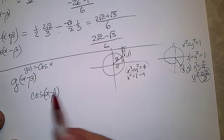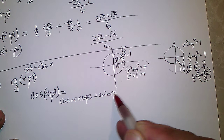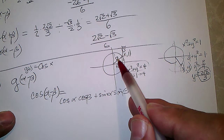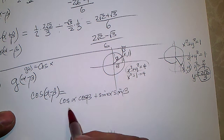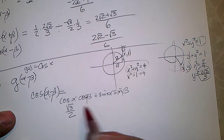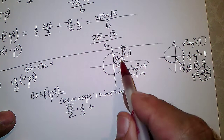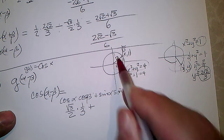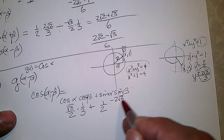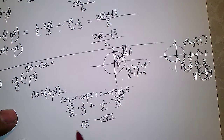Now for cosine of alpha minus beta, the formula is cosine alpha cosine beta plus sine alpha sine beta. Since the first circle has radius 2, divide by 2: cosine alpha is √3/2. The second is a unit circle, so cosine beta is 1/3. Sine alpha is 1/2. Sine beta is negative 2√2/3. The result is √3/6 minus 2√2 over 6, which equals √3 minus 2√2 over 6.